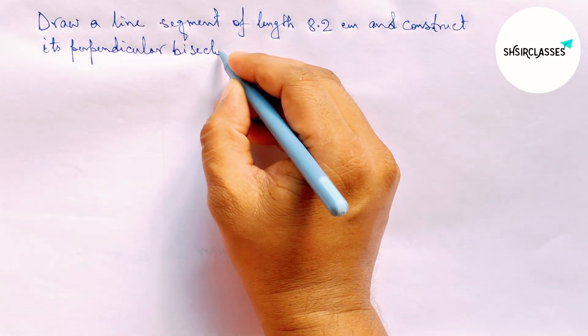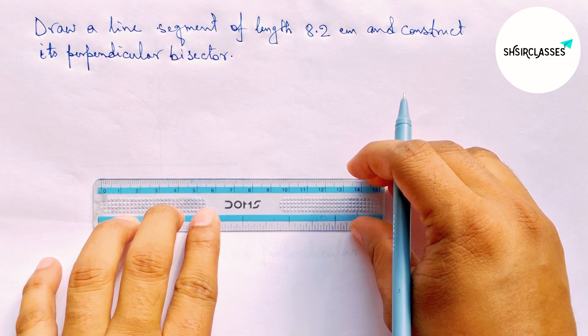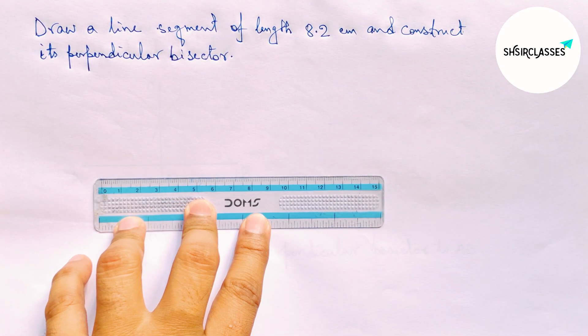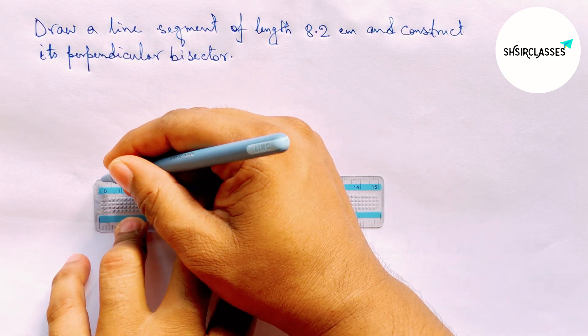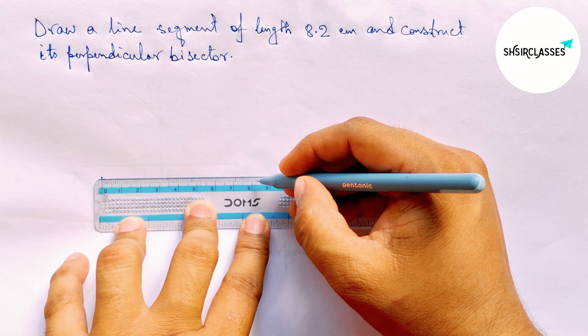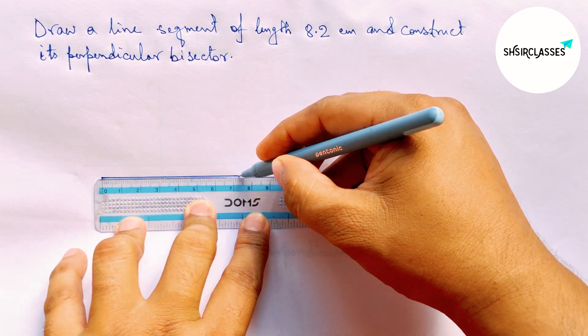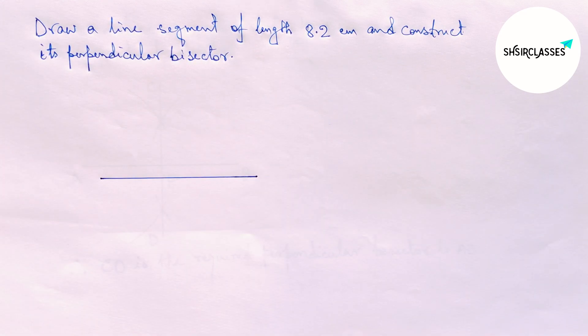Let's start the video. First, let us draw a line segment of length 8.2 centimeters. Marking here 0, then this is 8 and counting 2, so 8.2 centimeters. This is an 8.2 centimeter line segment.